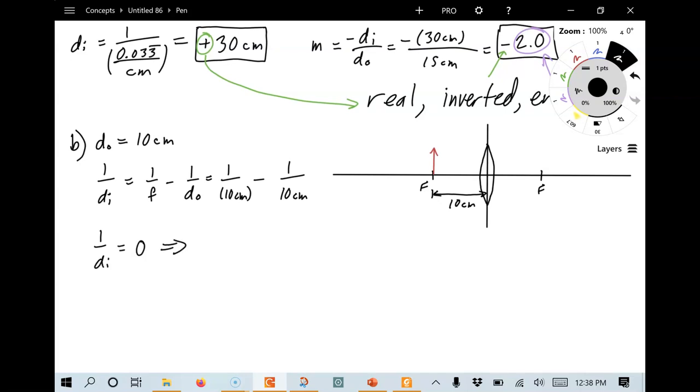We are going to get a 1 over DI equals 0. Or in other words, DI equals 1 divided by 0. What's that? That is infinity. So DI in this case is equal to infinity.